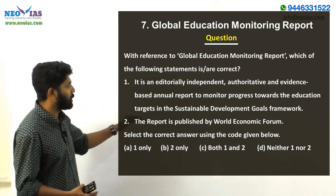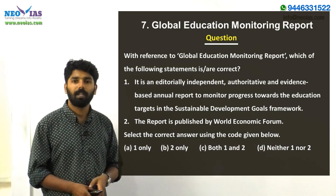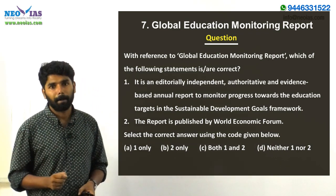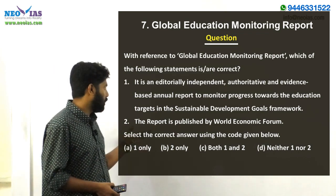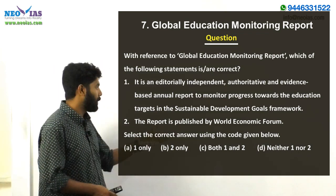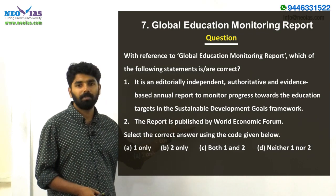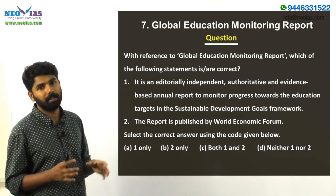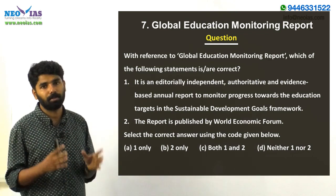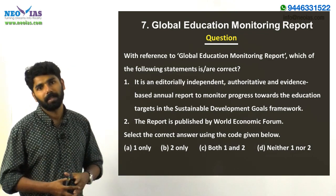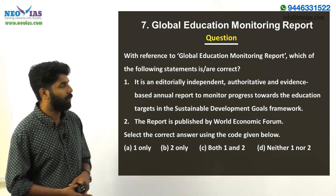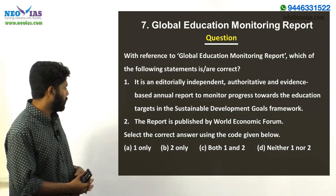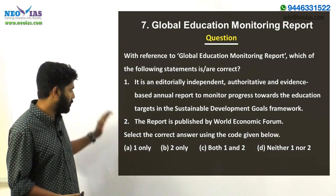The second statement says the report is published by the World Economic Forum. We can expect questions like this where they wrongly attribute the publisher. The wrong statement mentions the World Economic Forum, but we know this report is published by UNESCO. Therefore, the second statement is wrong, and the answer is option A — only statement one is correct.